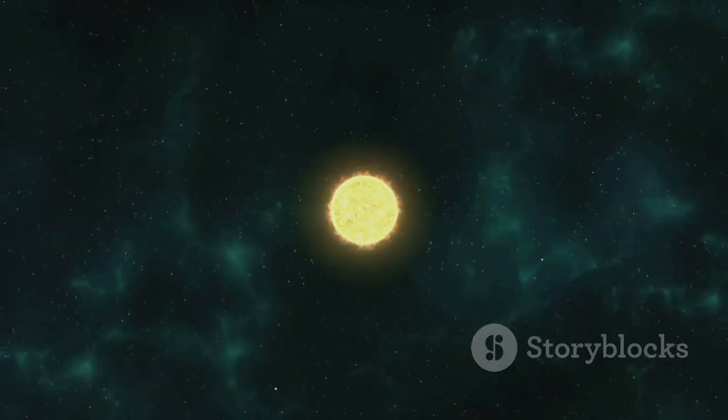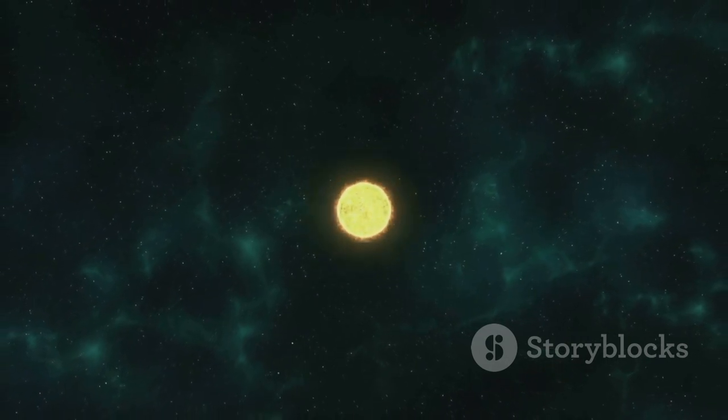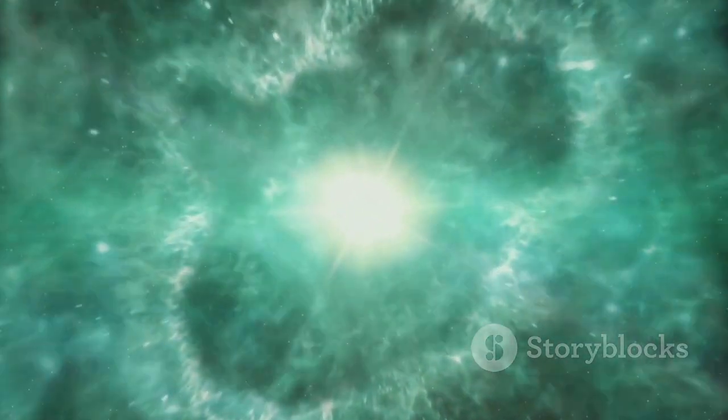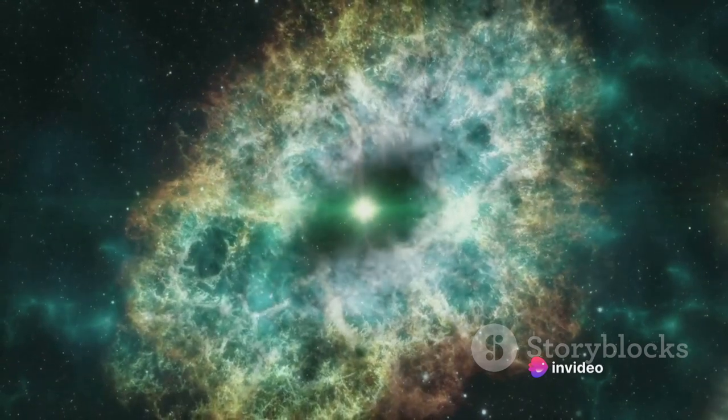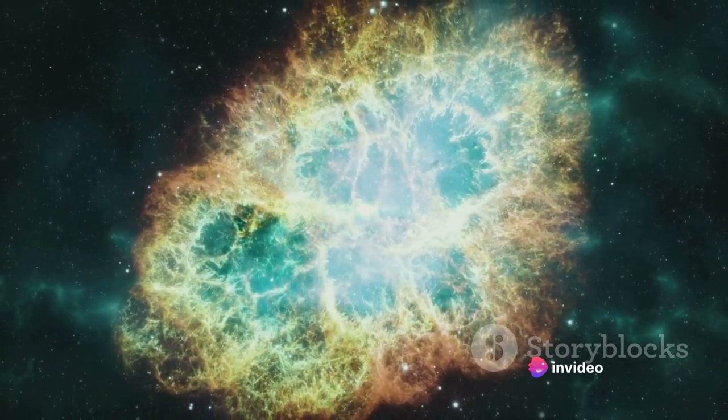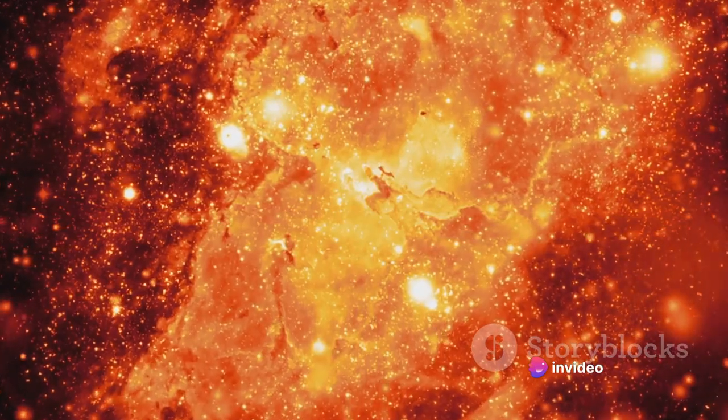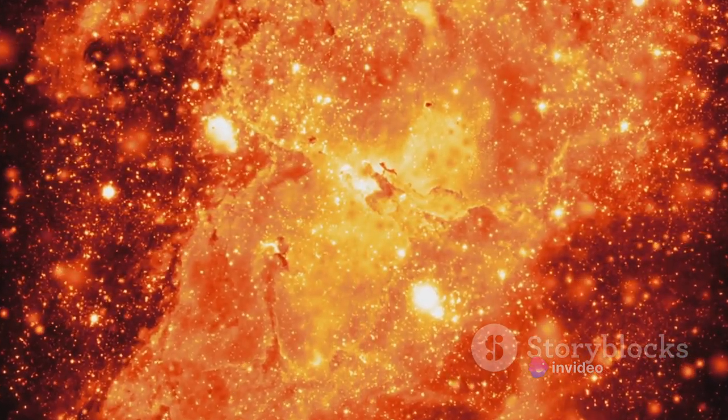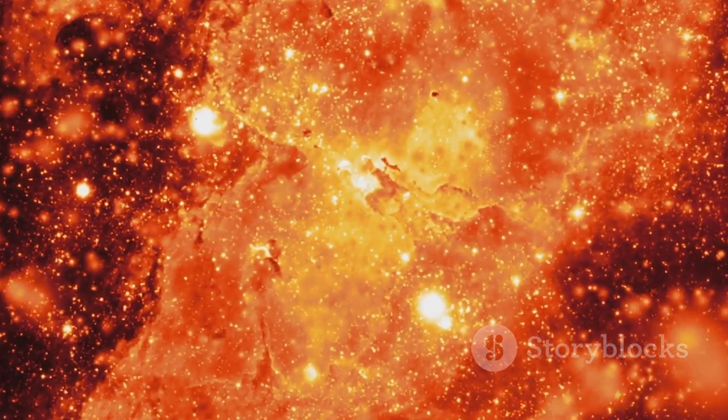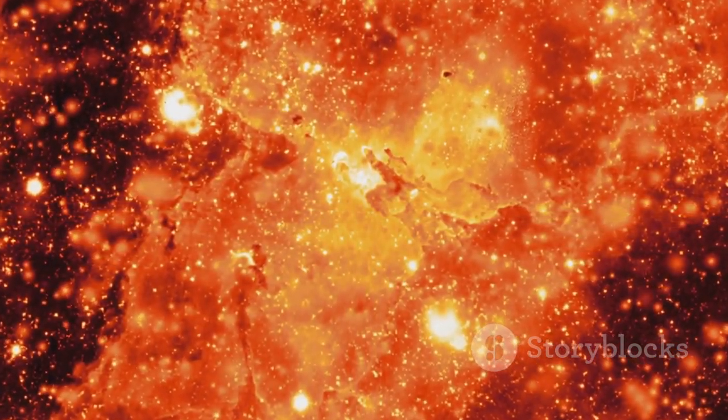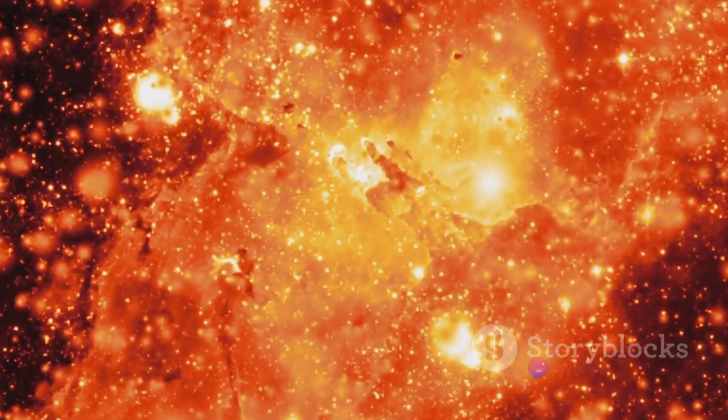The end of a star's life is as dramatic as its birth. As the red giant exhausts its nuclear fuel, it can no longer withstand the relentless pull of gravity. The core implodes and the outer layers are blown off in a spectacular explosion. This final violent act in the life of a star is what we call a supernova.